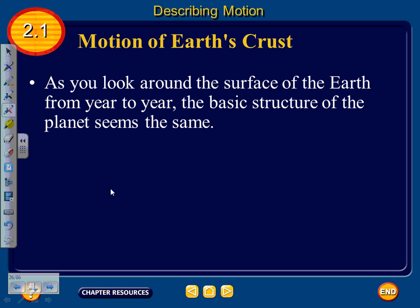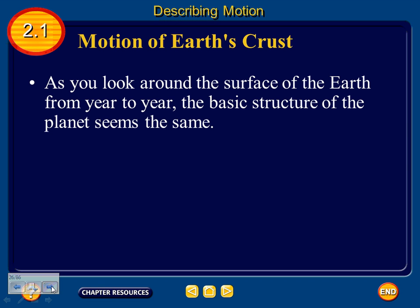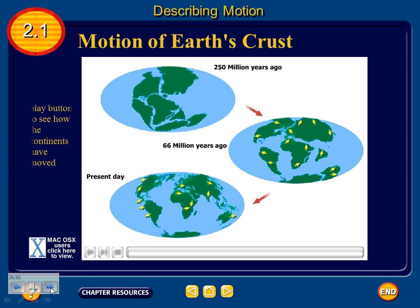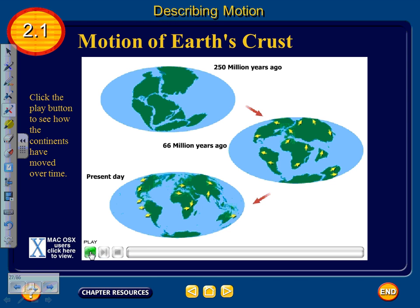Looking at the surface of the earth from year to year, the basic structure seems the same. But examining geological evidence over the past 250 million years shows large changes have occurred. This is plate tectonics — 250 million years ago the continents were together, and over geologic time they moved apart to what we have today. They are now coming back together, and in another 250 million years will look similar but not quite the same.